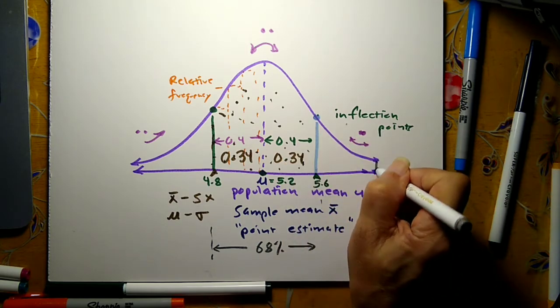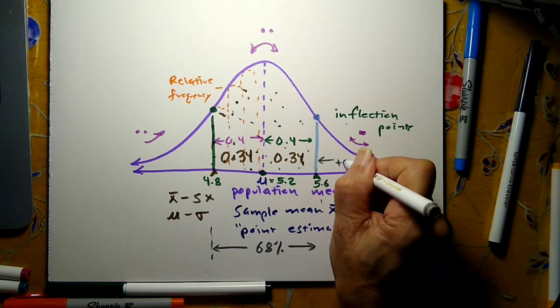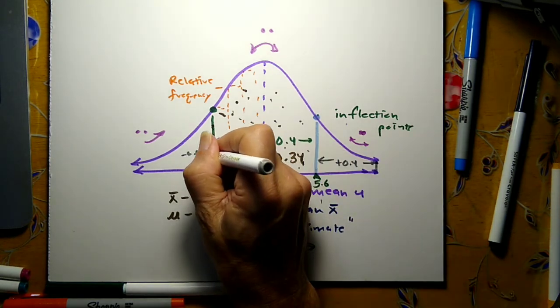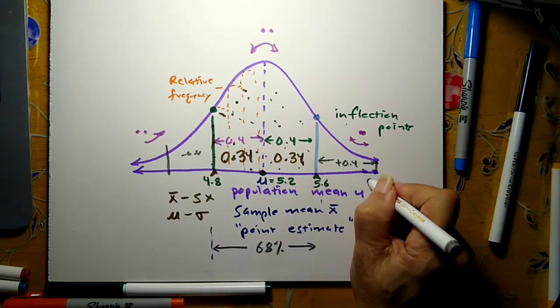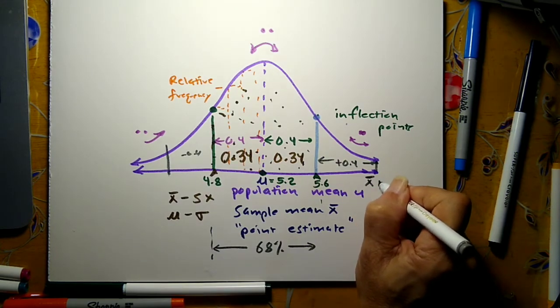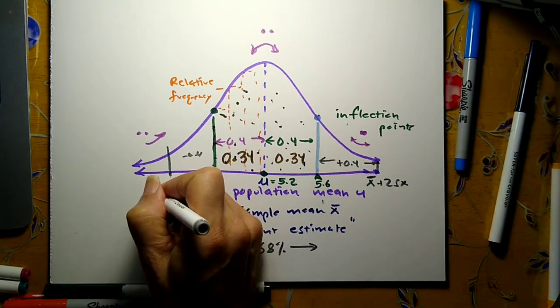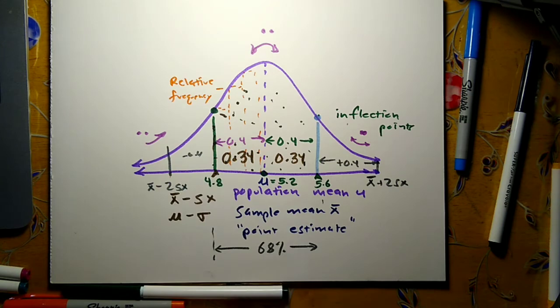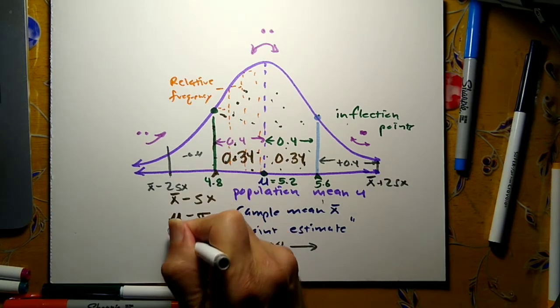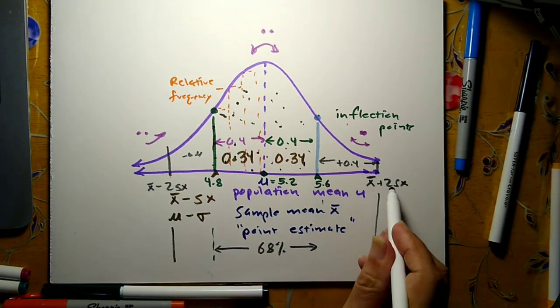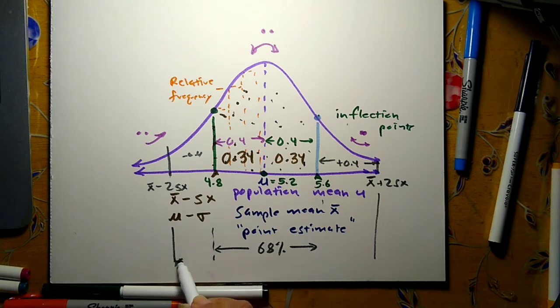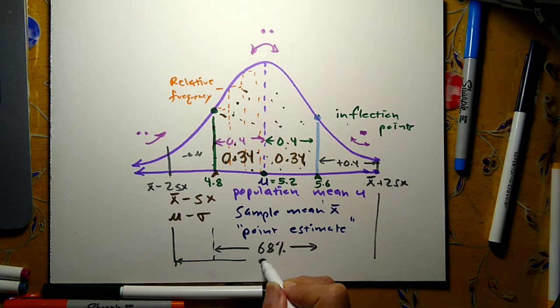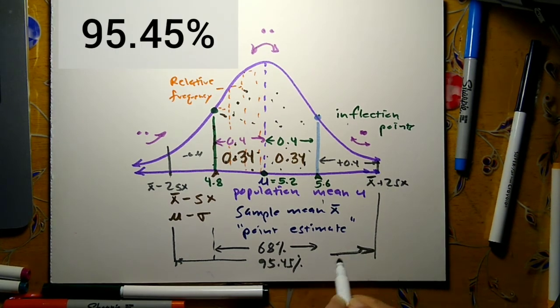If I go up one more standard deviation, say I go up another plus 0.4, and I go down another 0.4, this place here, and I'll mark it in sample value, sample mean plus two sample standard deviations, and the sample mean minus two standard deviations. For statisticians who are upset right now, I'll later on use the t-distribution, which looks like this but a little bit flatter. But that said, between here and here, between minus two standard deviations and plus two standard deviations above and below the mean, I will see roughly 95.45% of the data will be within that range.